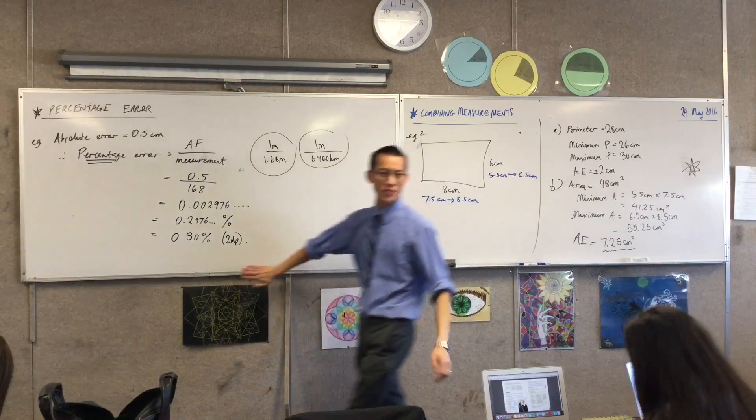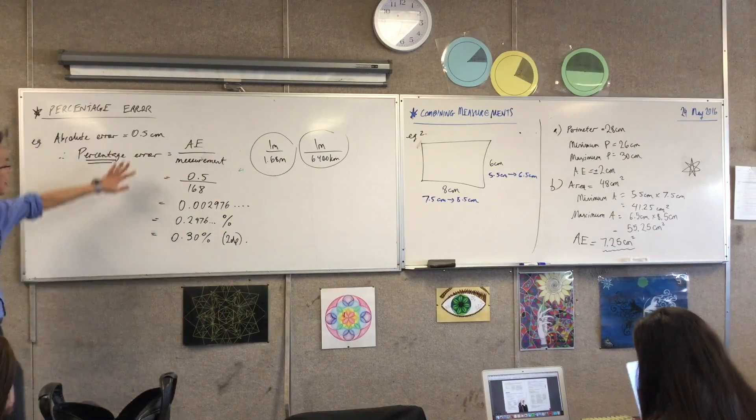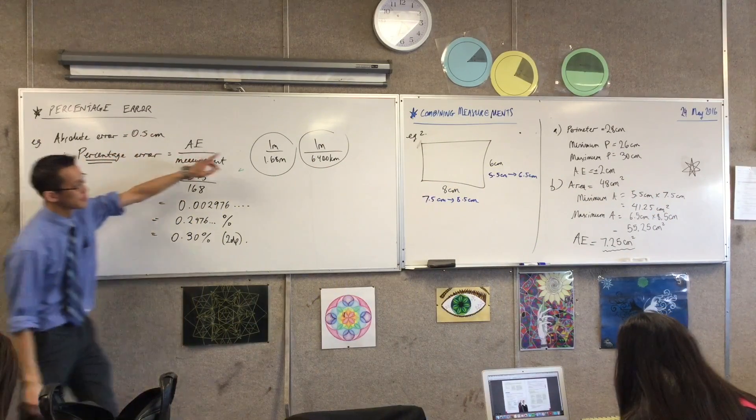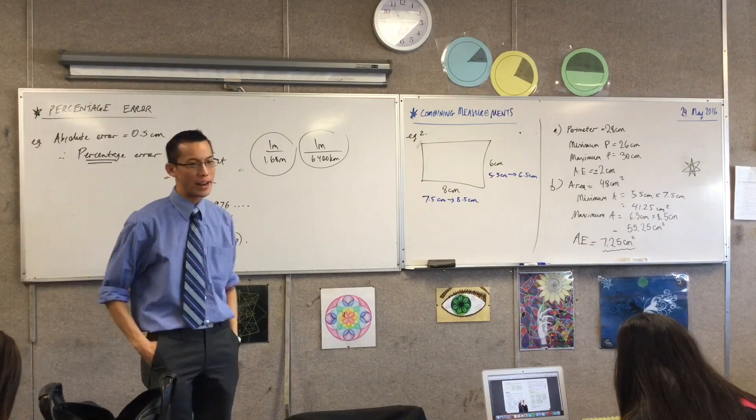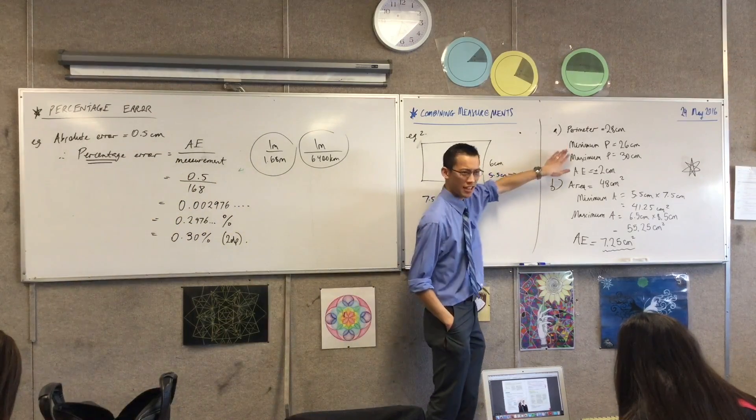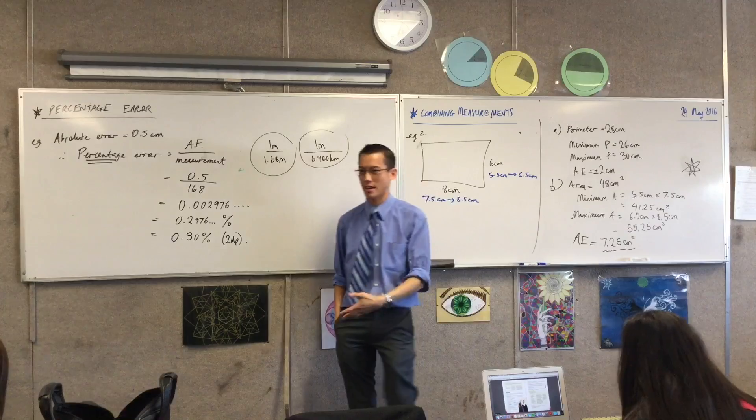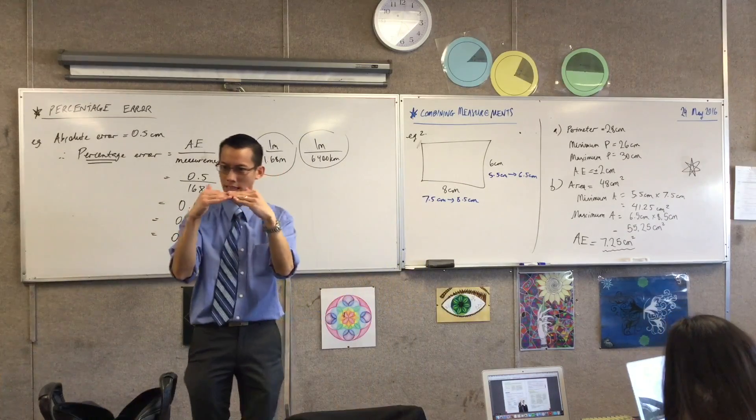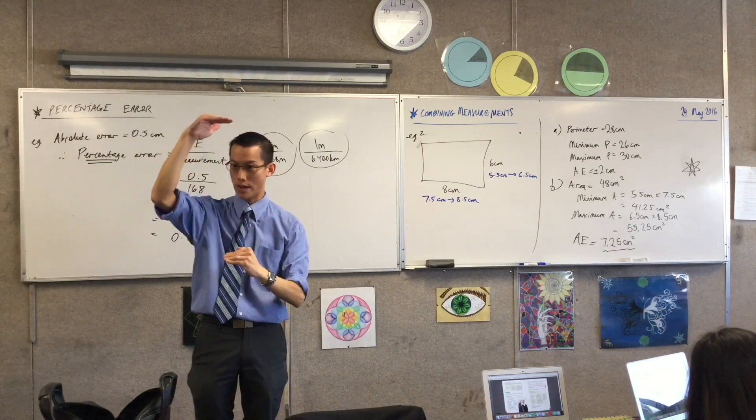So just to review, think about percentage error, absolute error in terms of your measurement, and then think about when you combine things, just be slow and think about how these end up sort of coming together and then compare what you're actually thinking it is versus how far away you could be. Okay?